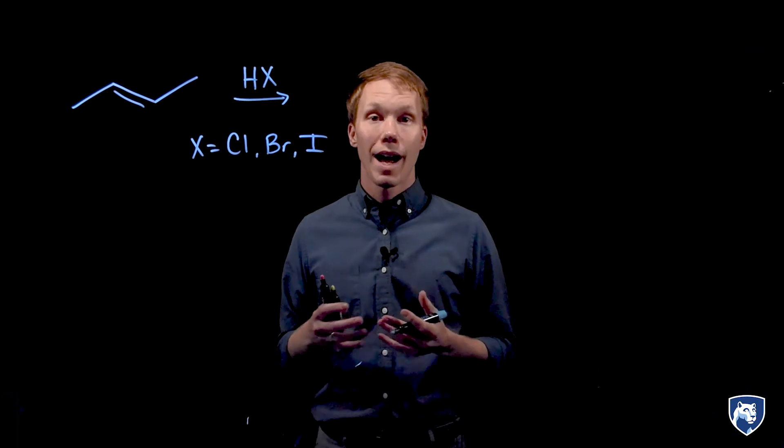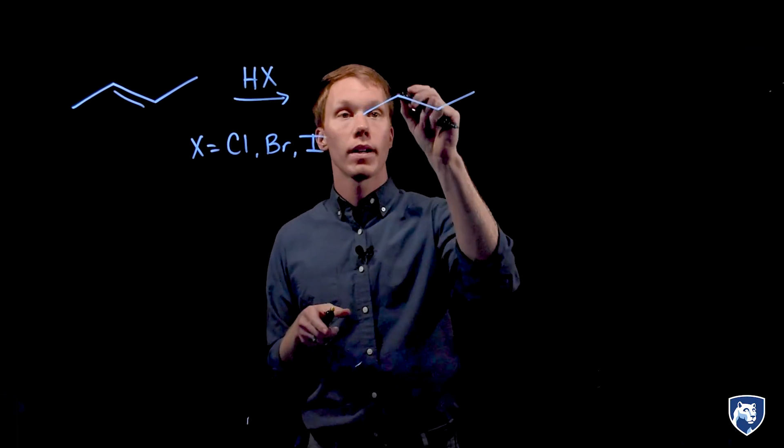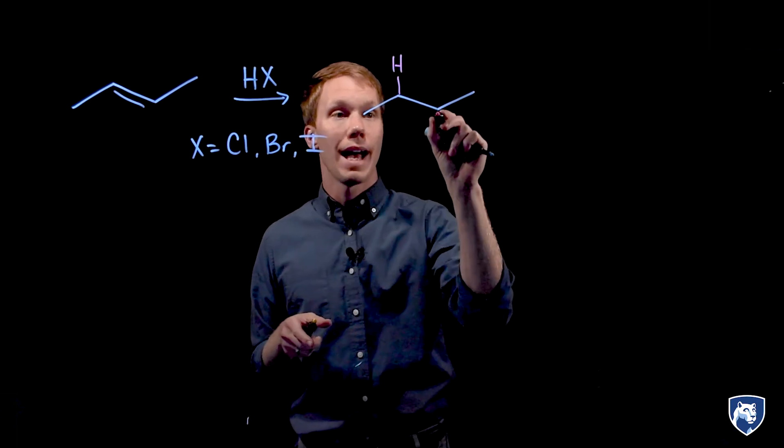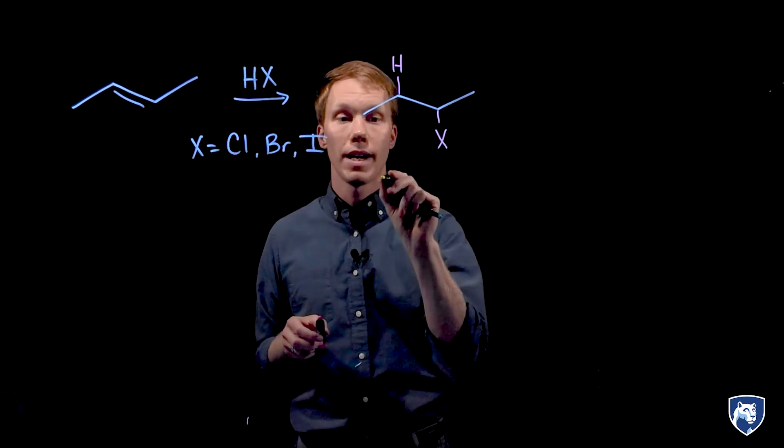When an alkene reacts with a hydrogen halide, we produce an alkyl halide, where hydrogen of the acid and the halogen of the acid have added to each carbon of the alkene.